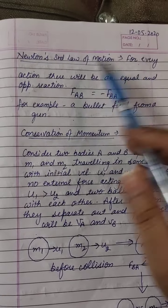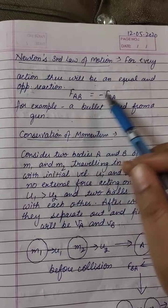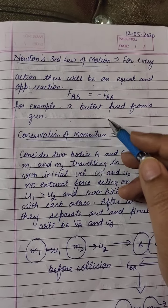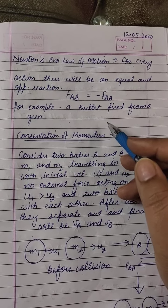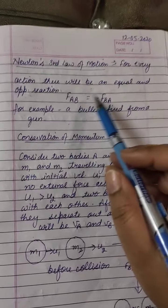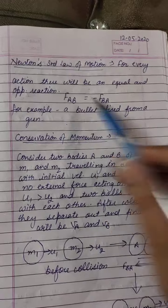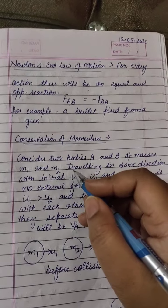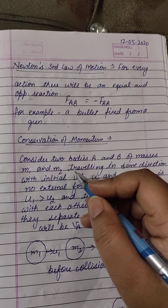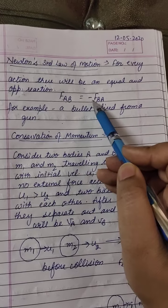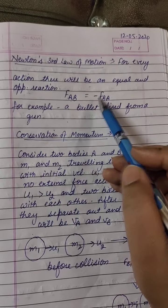The third law is for every action there will be an equal and opposite reaction. This means that when we apply force on one body to another body, the same force acts in the opposite direction. So if we have two bodies A and B, if A exerts force on B, then B will exert the same force on A but in opposite direction. So this means FAB is equal to minus FBA. This is Newton's third law of motion.